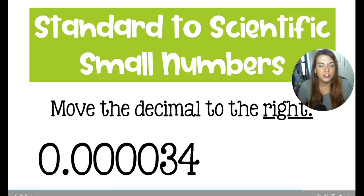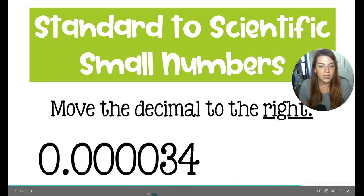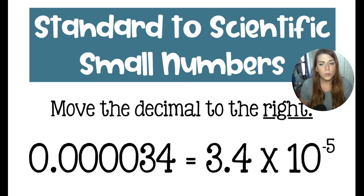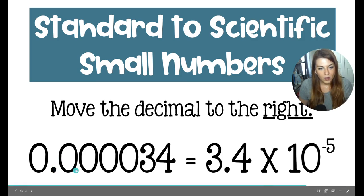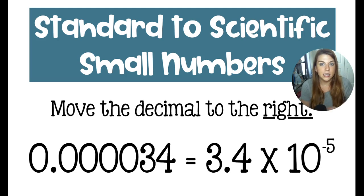If we wanted to take a standard notation number and turn it into scientific notation, but that number was a small number — a number less than one — we're going to move the decimal to the right. We're going to try to make our coefficient between one and 10. So we would want to put the decimal between the three and the four so that our coefficient is 3.4. We're going to move the decimal and count it five times: one, two, three, four, five. Because this number is a small number less than one, it's a negative exponent. So it would be 3.4 times 10 to the negative fifth.